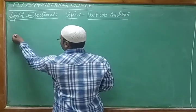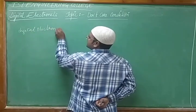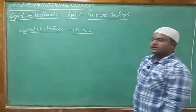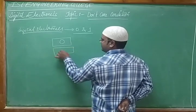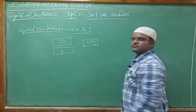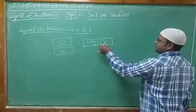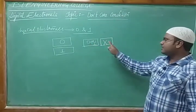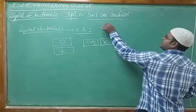Basically, what is a don't care condition? In digital electronics, digits can be 0 or 1. But when I'm not sure whether the digit is 0 or 1, then it is called a don't care, which is represented by the letter X. So this X indicates the digit can be 0 or it can be 1.